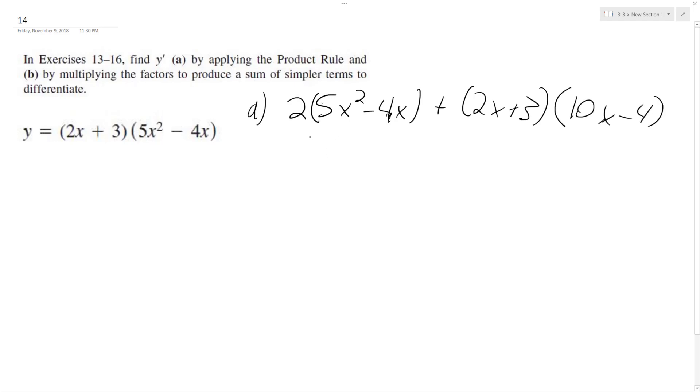Okay, so distribute out. I get 10x squared minus 8x, and then over here I get to FOIL everything. So plus 20x squared minus 8x plus 30x minus 12.